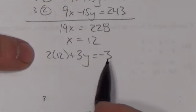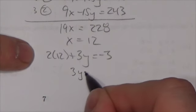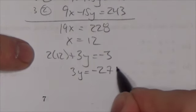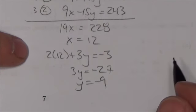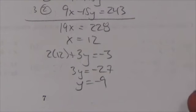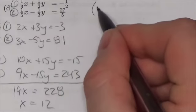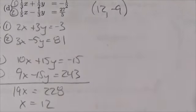2 times 12 is 24. When I bring that over, I get minus 27, which makes y equal to negative 9. So there are my two coordinates: 12 comma negative 9.